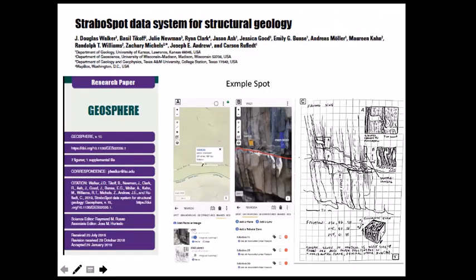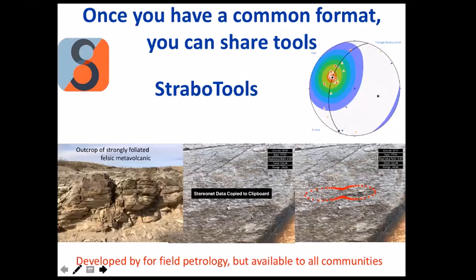The reason the graph database works so well for this is: on the right is the overall structure — fold one connects to different layers or connects to an axis. This is exactly how a graph database works on the left-hand side. Graph databases have nodes that contain information, and nodes are connected by edges that also contain information. That's why the graph database works so well for how we wanted to organize this data system.